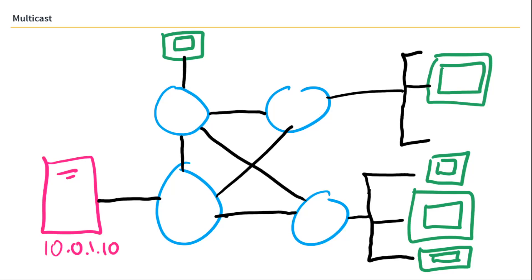So multicast solves the problem of one device like this server here, trying to initiate sessions to multiple endpoints, what we call receivers, which are going to be these green squares that are supposed to represent computers, but I'm terrible at drawing. So in a unicast setting, all of these devices could form sessions directly to this server and get the streaming information that way, but that would obviously clog up bandwidth.